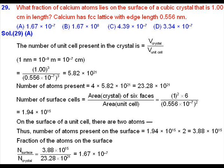Now we have to find the number of surface unit cells. We divide the area of six faces by the area of a single unit cell. The area of six faces is the area of a single face multiplied by 6, and the area of the unit cell is (0.556 × 10⁻⁷)² m². The number of surface cells comes out to be 1.94 × 10¹⁵.